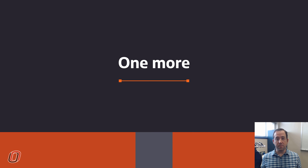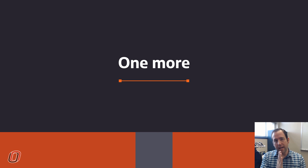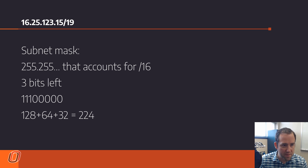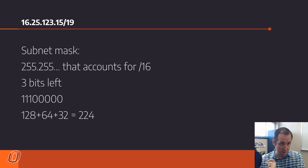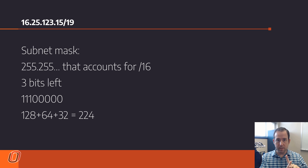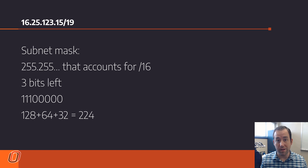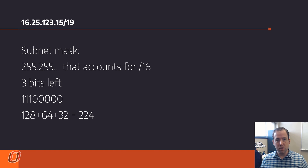One more example to make sure the process makes sense. We're going to make this one a little bit harder by shifting the interesting octet into the middle of the IP address. We're going to use a slash 19 subnet: 16.25.123.15/19. The first thing we need to do is figure out what the subnet mask is. 255.255 accounts for 16 bits of that 19, leaving us three bits left. That means the third number in the subnet mask is 111 followed by five zeros. 128 plus 64 plus 32 is 224. So the subnet mask is 255.255.224.0, because everything after the subnet mask changes to zeros.